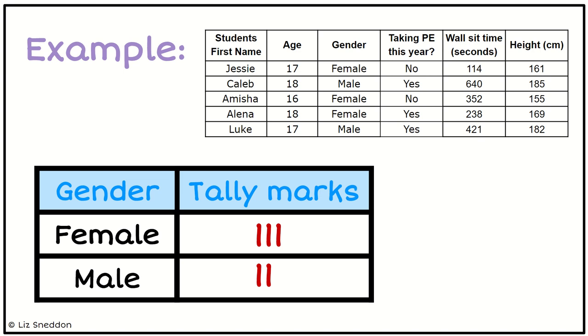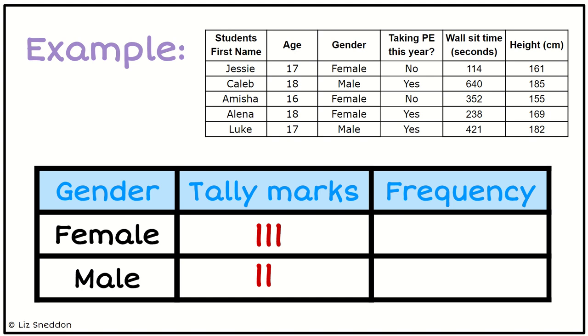To turn this into a frequency table, I need to add another column on the end with the frequency label. Then I just need to count up those tally marks. So females, there are three tally marks, so it's got a frequency of three. Male has a frequency of two. And so now it's become a frequency table.